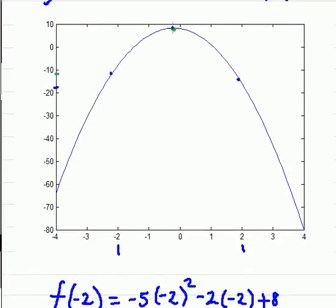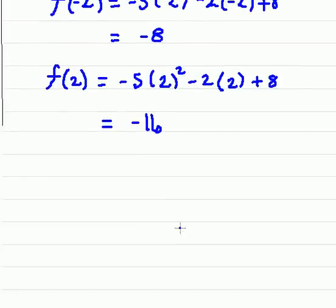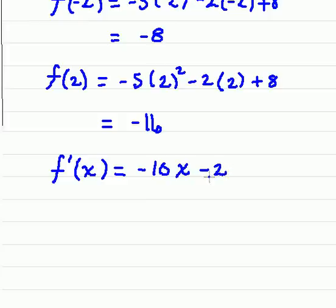Now to find the slope of the tangent line when the slope is zero, we're going to have to figure out what this x value is. And to do that, we're going to take the derivative first off. So f prime of x is equal to negative 10x minus 2. Alright, so the slope is zero. And now in this equation, we need to solve for x.